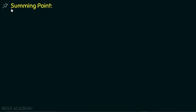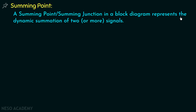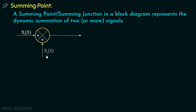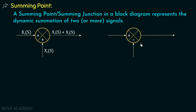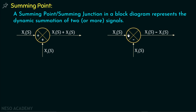A summing point, or summing junction, in a block diagram represents the dynamic summation of two or more signals. Wherever we want to add two or more signals in a block diagram, we will use a summing point. This is the symbol of a summing point used to add two signals. If this signal is x1 and this signal is x2, then the resultant signal will be x1 minus x2. The polarity plays a very important role here. If the polarity is positive, the signal will be positive; if negative, it will be negative. In this case, both signals are positive and are added with a positive sign; in this other case, one signal is negative and is added with a negative sign.